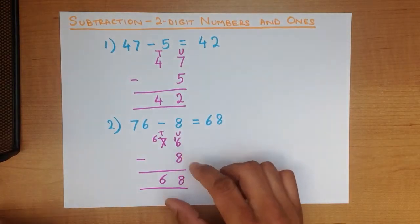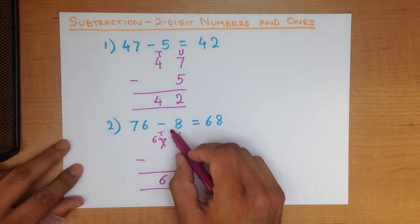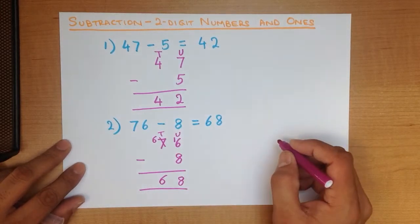Now did you understand how we did this? If not, what we are going to do is, we are going to do this same question again. 76 minus 8. How did we do this?